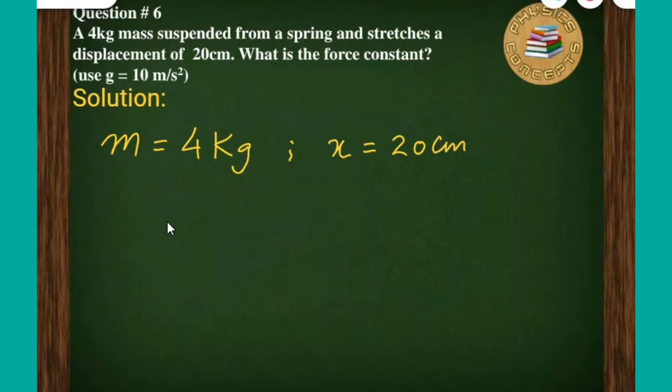The SI unit of length is meter, so we need to convert it into meter. We will divide it by 100 because in 1 meter we have 100 cm. Now that would become 0.2 meter.